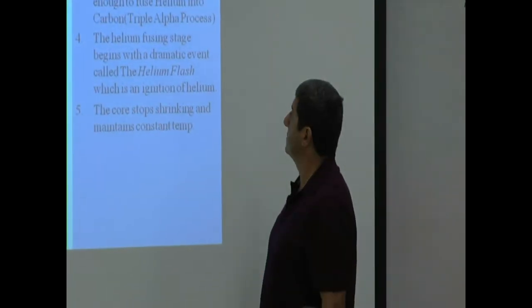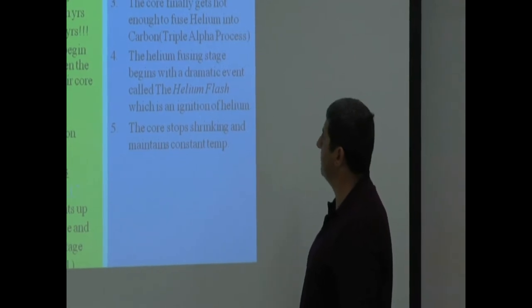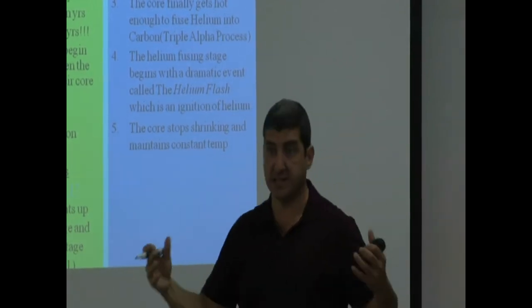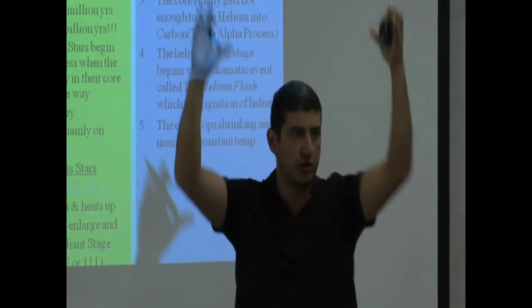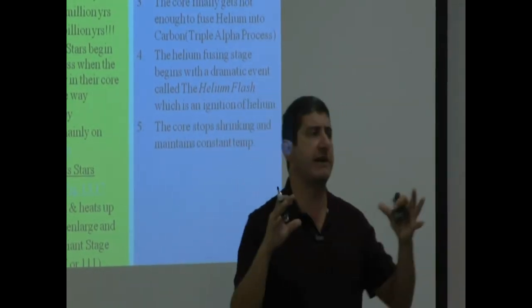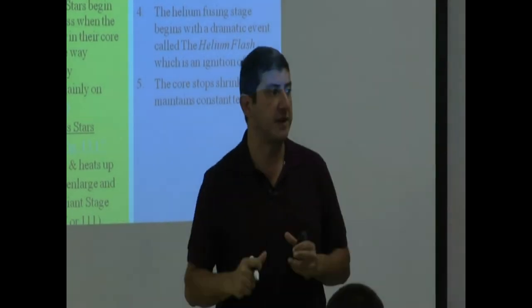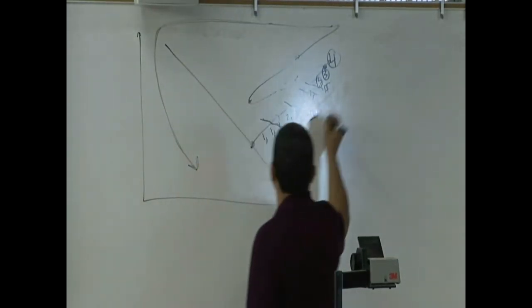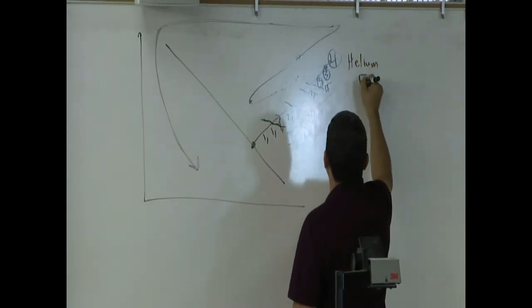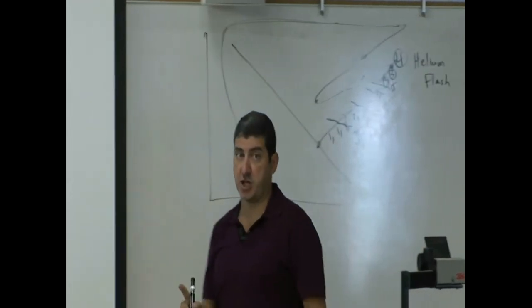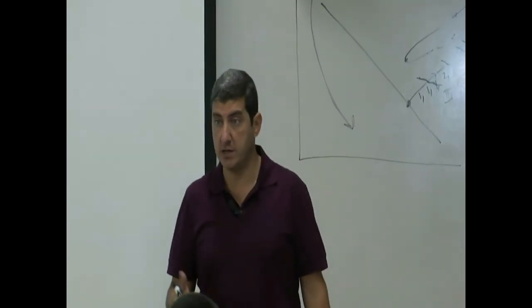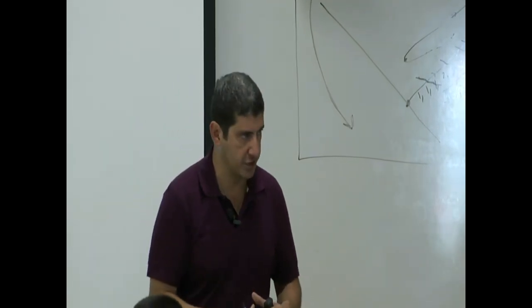Step four, the helium fusing stage begins with a dramatic event called the helium flash, which is an ignition of helium. It ignites, like almost like a spark - very heavy spark. We have a star that is experiencing helium flash. It's going to look very bright for a while. So step four takes place over here at the corner. That's the helium flash. This is good news for the star because the star can live longer now. It doesn't have to die right away. It can now make energy by fusing helium together.